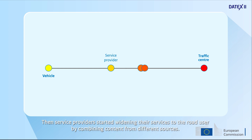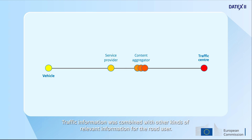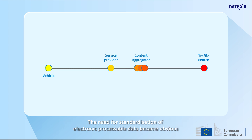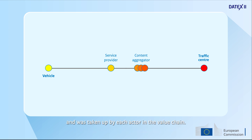Then service providers started widening their services to the road user by combining content from different sources. Traffic information was combined with other kinds of relevant information to the road user. The need for standardization of electronically processable data became obvious and was taken up by each actor in the value chain.